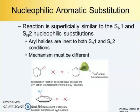Dissociation does not occur because the aryl cation is unstable — the aryl carbon bears an sp2 orbital — therefore no SN1. Backside displacement is sterically blocked by the aromatic ring, therefore no SN2. So the mechanism must be different from both SN1 and SN2.